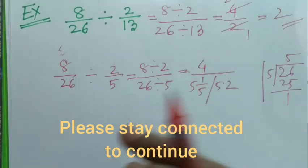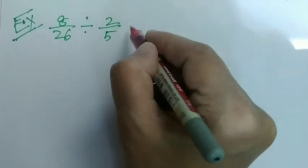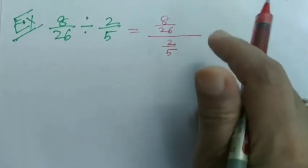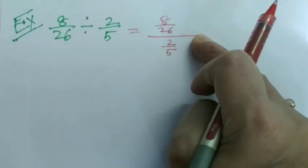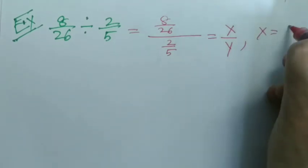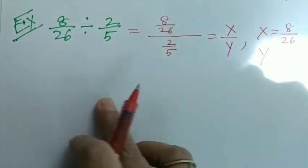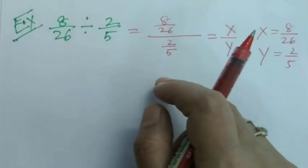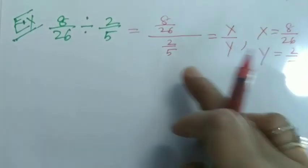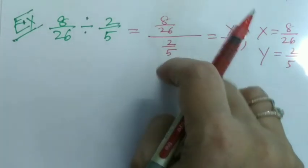This can be written as x divided by y, where x is equal to 8 by 26 and y is equal to 2 by 5. Now we'll try to convert this x by y to a simpler form so that our sum on division becomes easy.